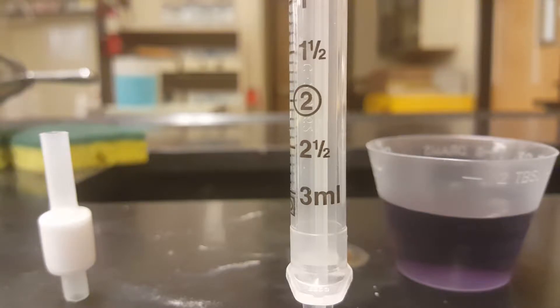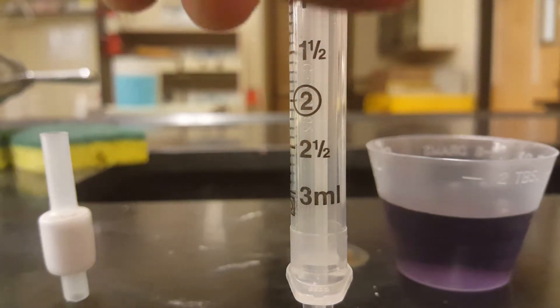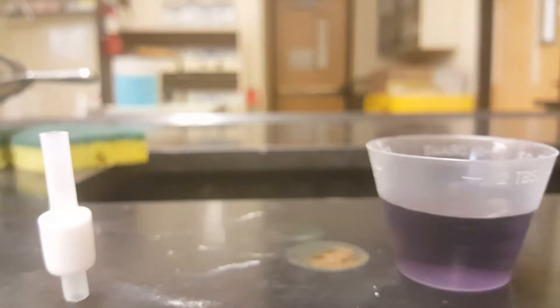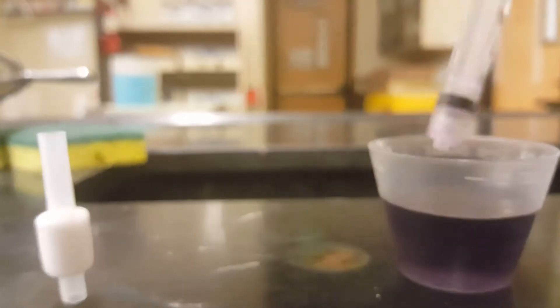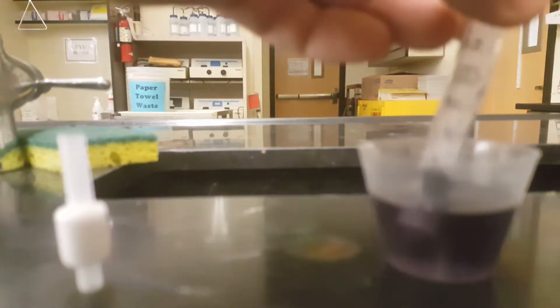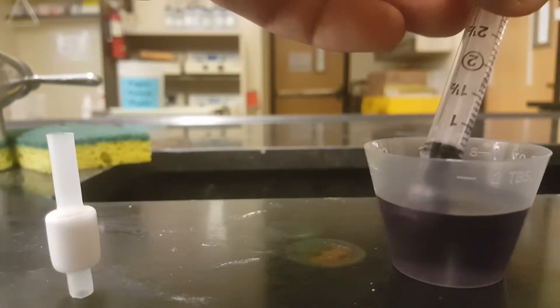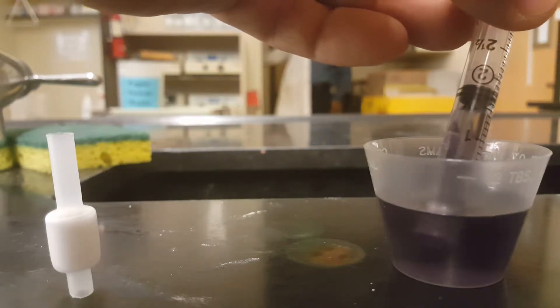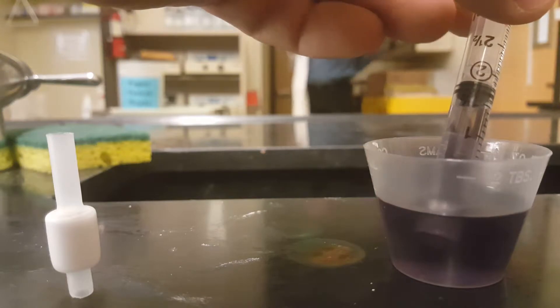The three milliliter syringe is for your Kool-Aid. So you're only going to put one milliliter into your cartridge. You can take your syringe and your Kool-Aid and load just over a milliliter of the Kool-Aid into your syringe.